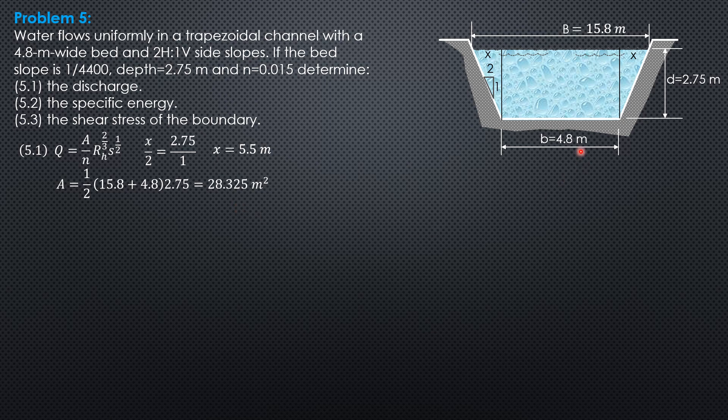The wetted perimeter is 4.8 plus 2 times the slanted side that is wetted. 4.8 plus 2 times square root of x square, which is 5.5 square plus 2.75 square. So 17.098 meters.